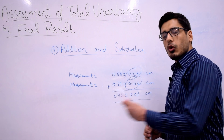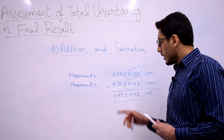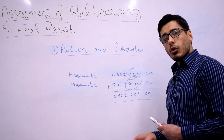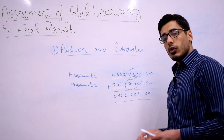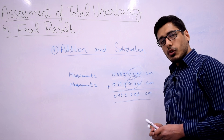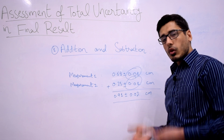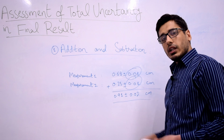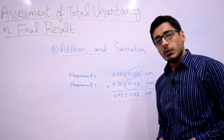You might be wondering about the ± symbol. It simply explains how much your reading can be below or above your actual measurement. If you need more detail, you can follow my previous video on the concepts of uncertainty — I will put the link in the description below.